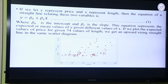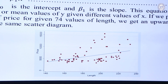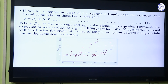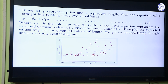Now, from this equation we are getting different expected values of y for given values of x. We are getting the expected values of y, which are the mean values of y for different values of x. Here we have 74 values of x. So for 74 different values of length, solving this equation we are getting expected values of y — that is expected values of price, which is the mean value. If we plot those mean values in the same diagram and join them, we get the blue straight line which is upward rising.